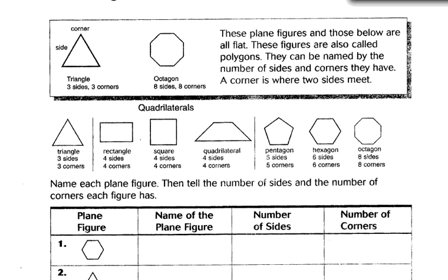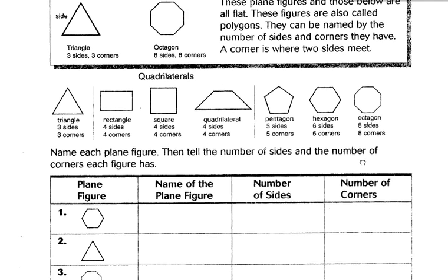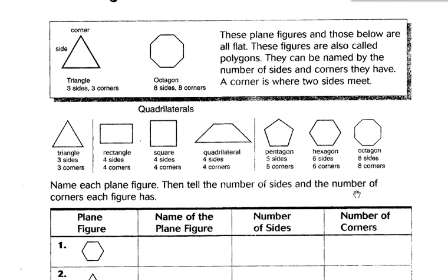Okay, this is some of the only thing you'll be doing this week. I'm going to do a couple examples so that way you could see what you're supposed to do for tonight or for this week. Now let's look at the top. We have triangles and an octagon. It says these plain figures and those below are all flat. They're not 3D.